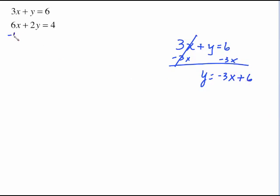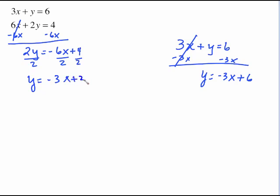The other one up here requires a little more work. Subtract 6x from both sides. Those cancel. We have 2y equals negative 6x plus 4. Divide everything by 2. And we have y equals negative 3x plus 2. So that's our work for getting these into slope-intercept form.